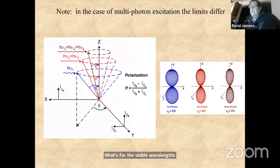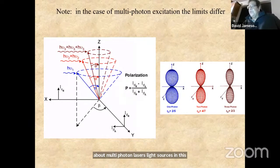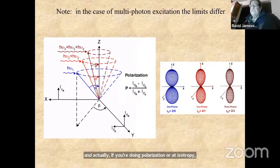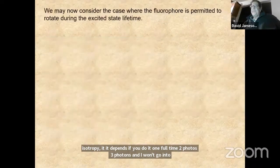You'll hear about multi-photon light sources in this course. If you're doing polarization or anisotropy, the photo selection process differs depending on whether you're doing one-photon, two-photon, or three-photon excitation — I won't go into the reason why, but the photo selection process is different.